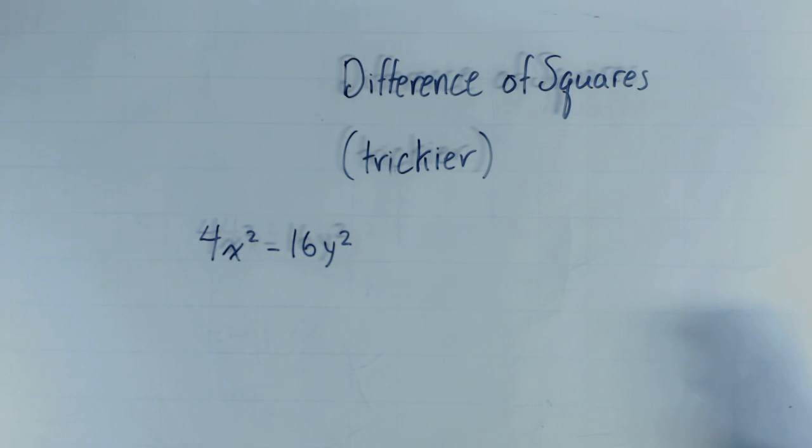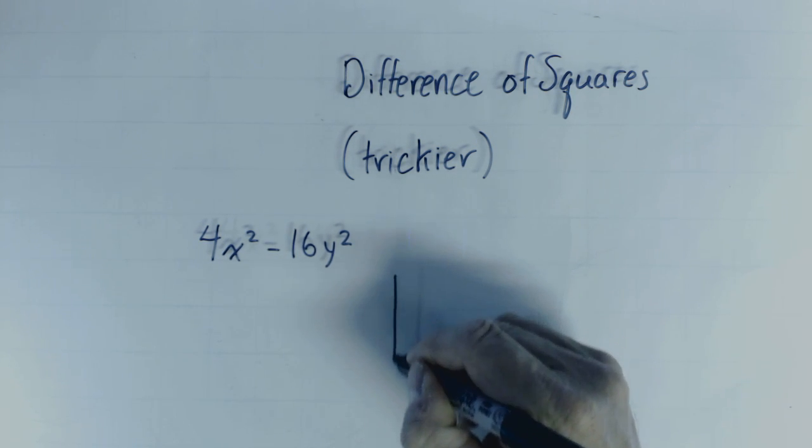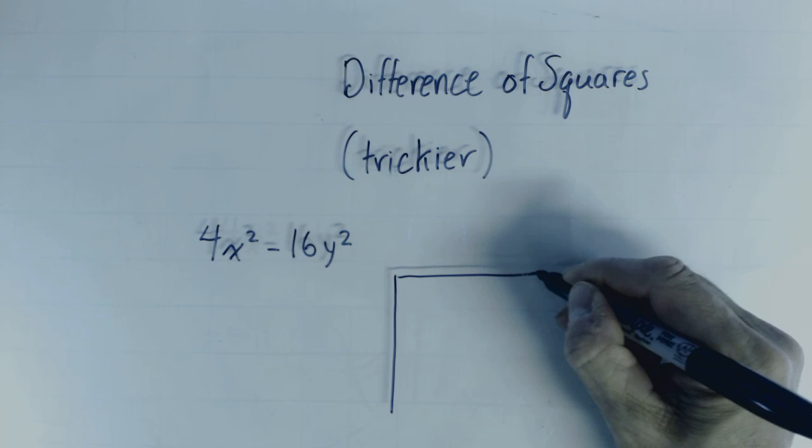Differences of squares can get trickier. In this case we don't have the classic quadratic form, but we do have basically a term that's squared here and a term that's squared here, and so we can factor this just as a difference of squares.